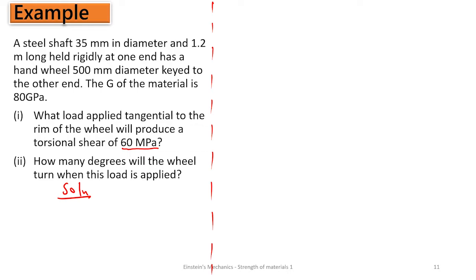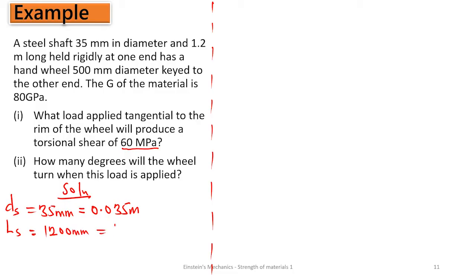Solution. We can write down our parameters and start working. The diameter of the steel shaft is 35 mm, which is 0.035 meters. The length of the shaft is 1.2 meters, which is also 1200 mm. The reason I'm converting to both millimeters and meters is because you can choose to work with either. I'll be covering both so that you know how to work with both next time.